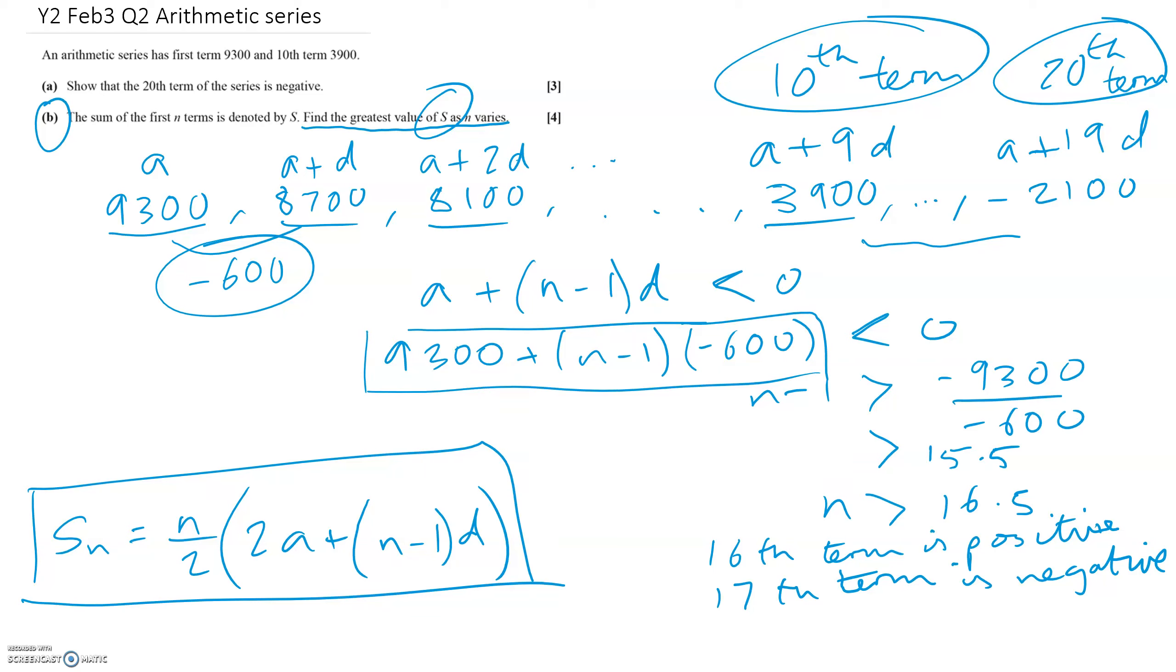So if we add up the sum of the first 16 terms, that will give us the biggest value of s, the greatest value of s. Because from then on, we're going to start taking away numbers when we add up the terms.